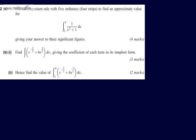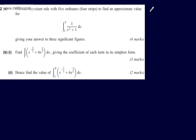This is question number 2. In part 8, we're asked to use the trapezoid rule with 5 ordinates or 4 strips to find an approximate value for the integral from 1 to 5 of 1 over x squared plus 1 with respect to x, giving our answer to 3 significant figures. The question carries 4 marks.